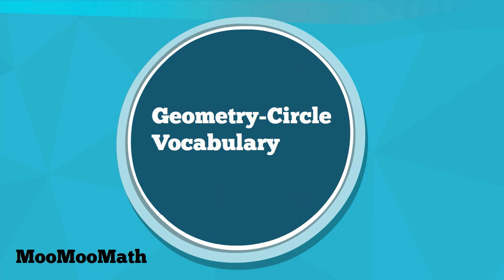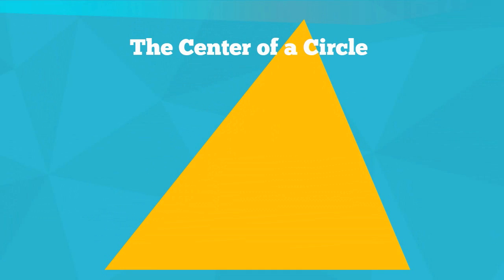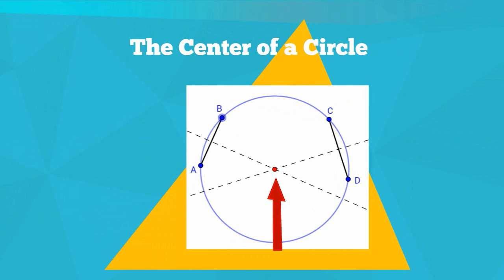Let's begin with the center of the circle. It's the point of a circle in which all points of the circle are an equal distance away.